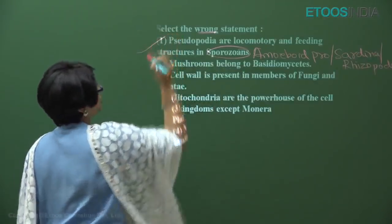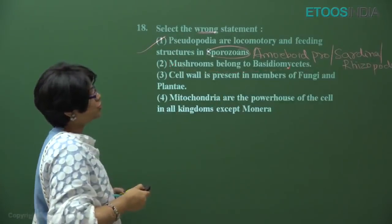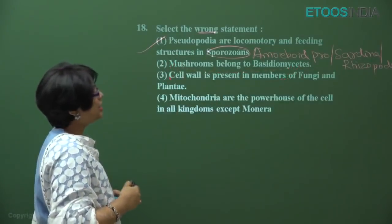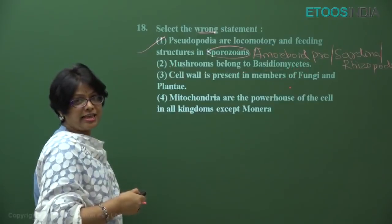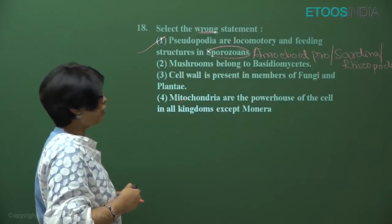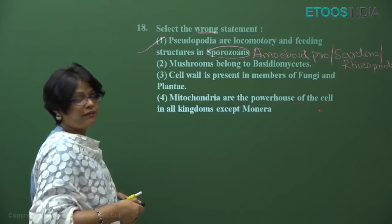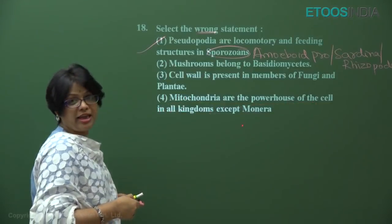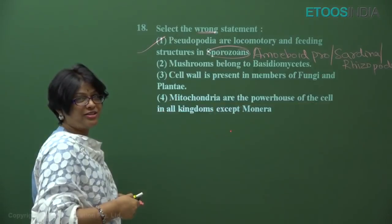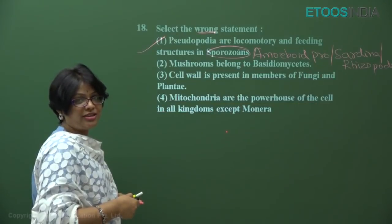So option one would be the answer. The rest — all three options are correct: mushrooms belong to Basidiomycetes; cell wall is present in fungi as a chitinous cell wall, while in Plantae it is a cellulosic cell wall; and mitochondria are the powerhouse of the cell in all kingdoms except Monera, because Monera includes prokaryotes which lack membrane-bound organelles.